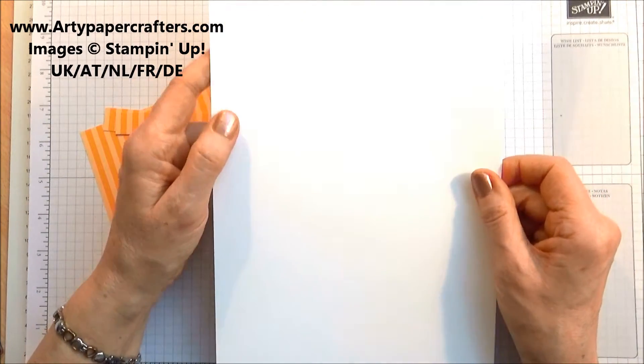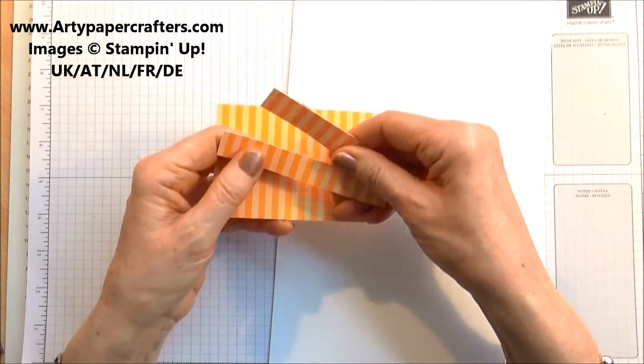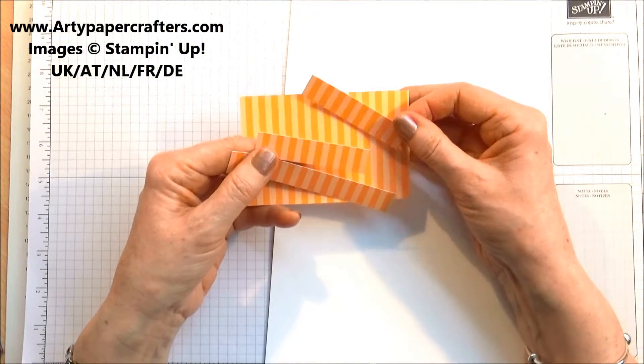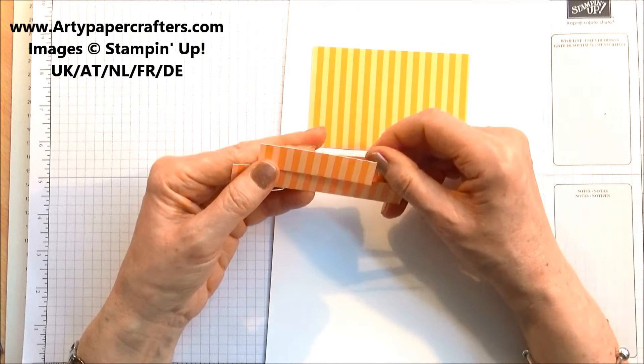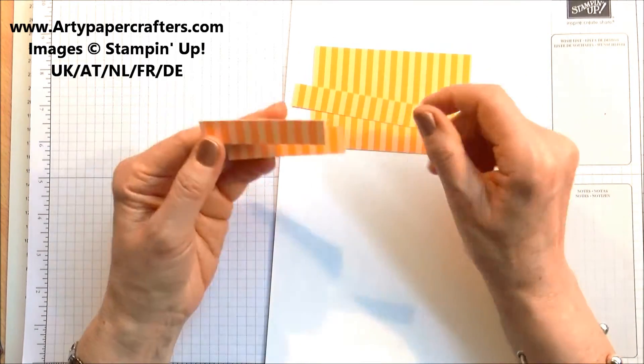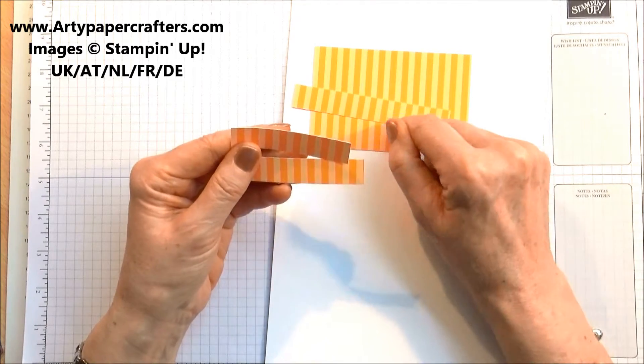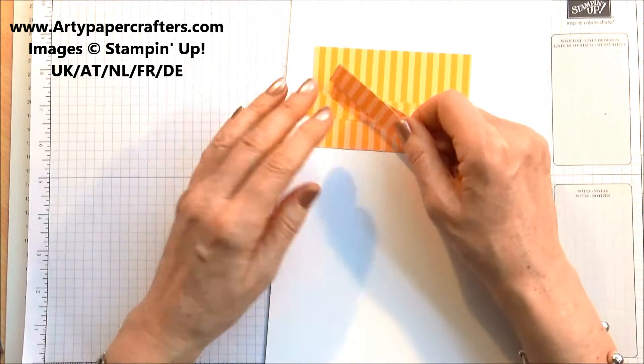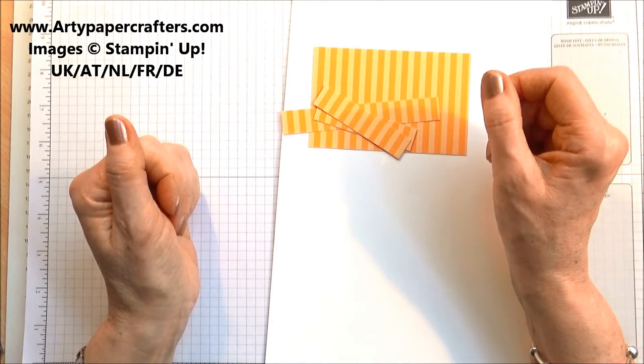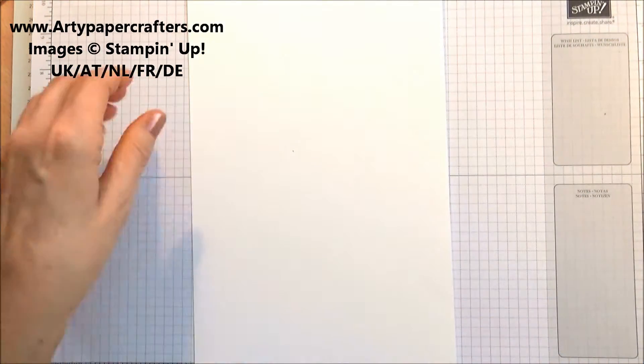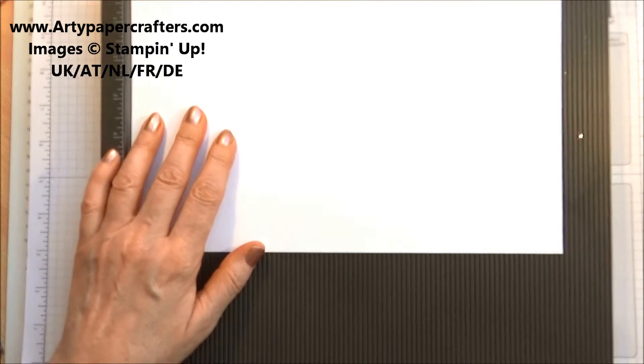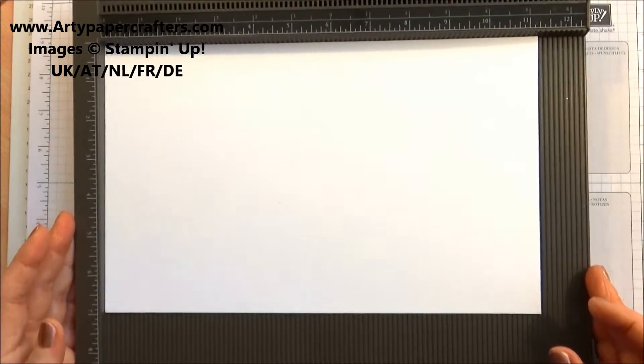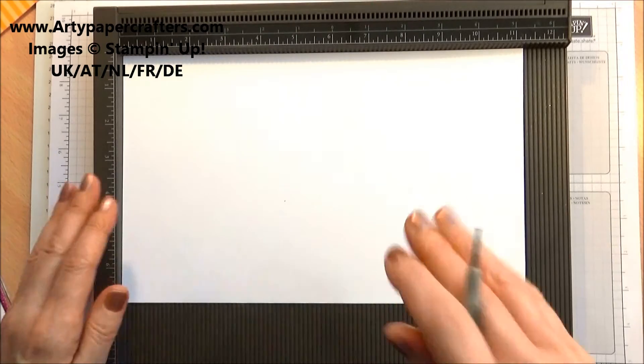So eleven and a quarter by seven and then we have four pieces of DSP in Mango Melody which is cut at four and a quarter by two and three quarters, eleven by seven, four and a quarter by five eighths and you need one of those and then you've got two pieces that measure the same two and three quarters by five eighths, seven by one point five and you need two of those. So let's get the scoreboard out and start scoring on our piece of Whisper White. So we're going to put it in on the long side and you can't see what I'm doing can you? So let's pull you out slightly.